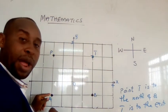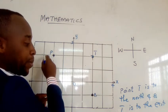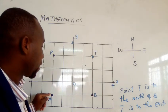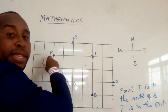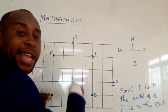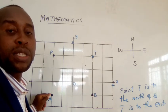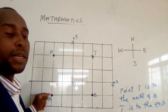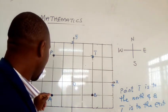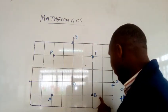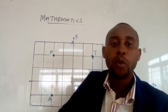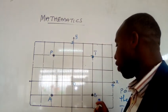Now let's describe point A. We are going to stand at P and then at B to describe point A. When you are standing at P, you will see that point A is to the south of point P. And when you are standing at B, you will see that point A is to the west of point B.